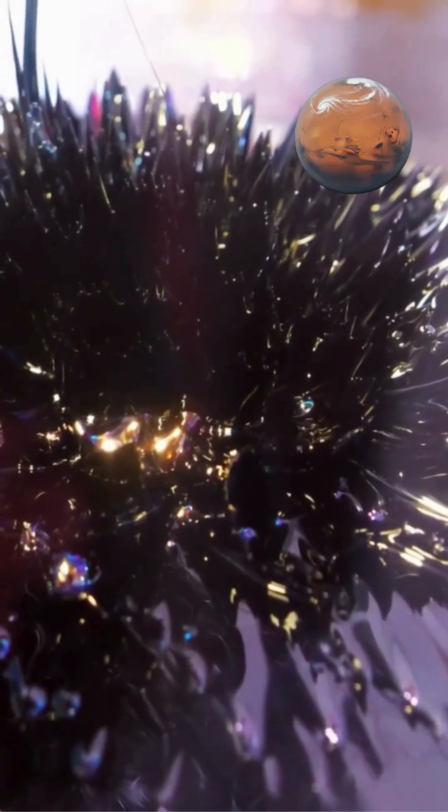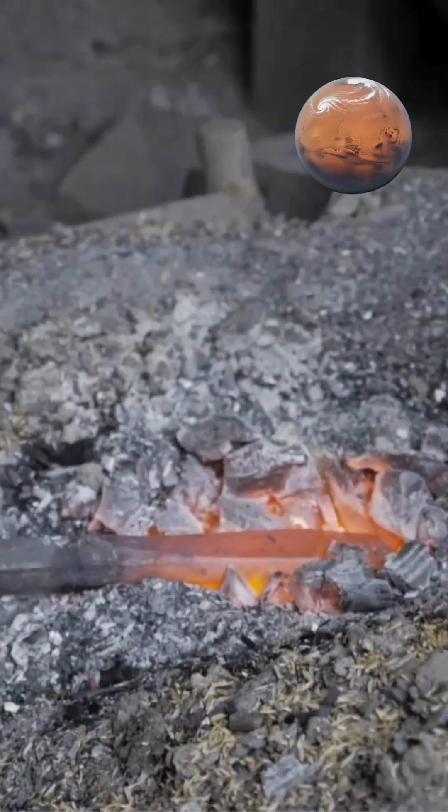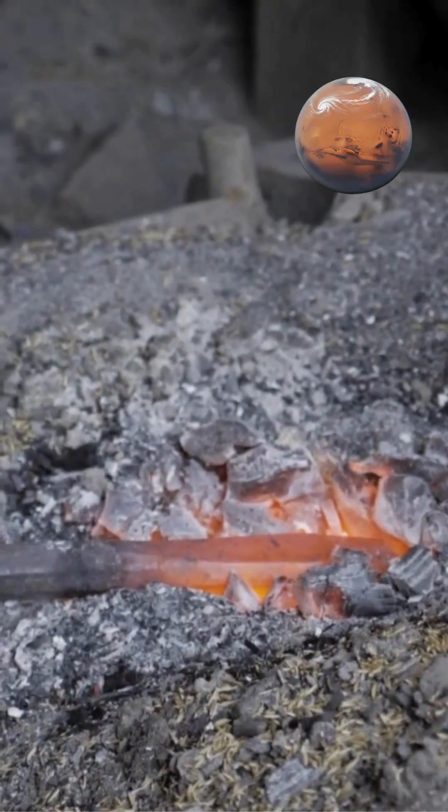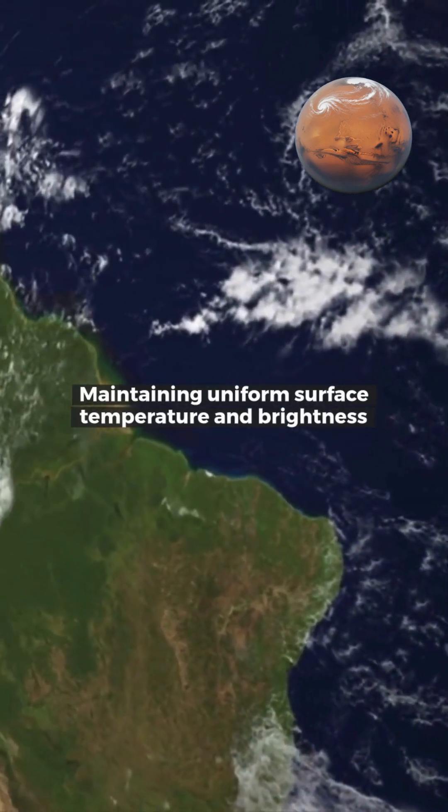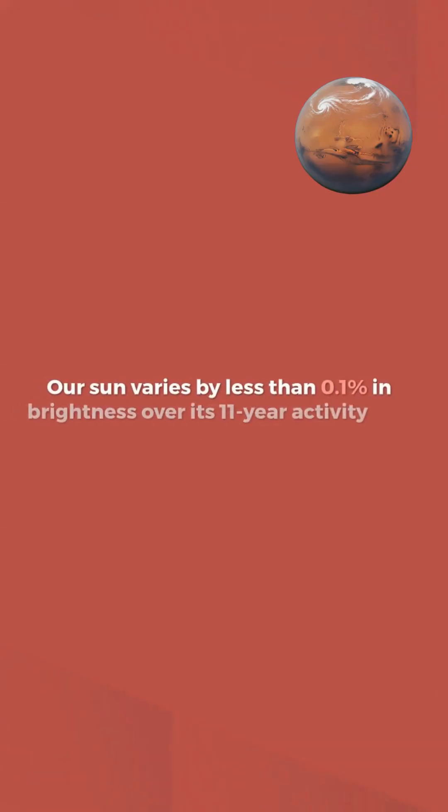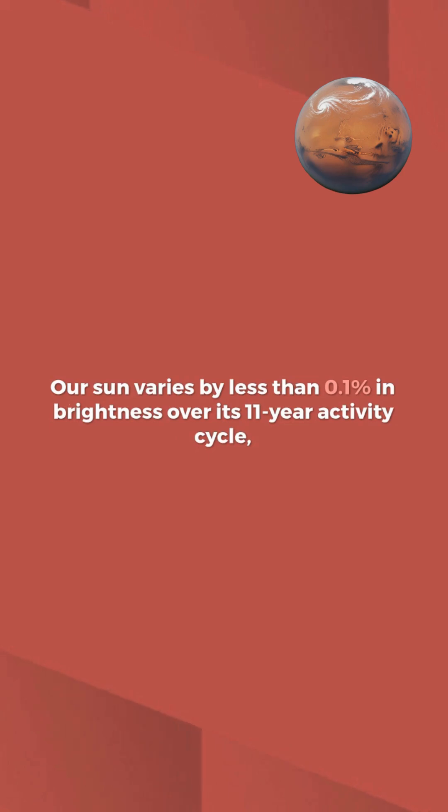Rising hot plasma and sinking cool material create circulation patterns that prevent localized hot or cold spots from developing, maintaining uniform surface temperature and brightness. Our Sun varies by less than 0.1% in brightness over its 11-year activity cycle.